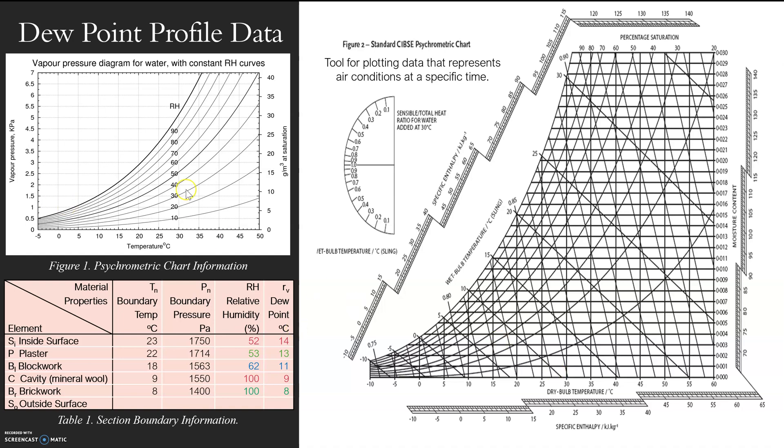There's two curves here. They're both the same, both psychrometrics. The relationship is always the same. The one on the left has been produced to show us the relationship between vapor pressure in kPa and temperature, which is what we've got. We've got our boundary pressure at Pa and our temperature in degrees Celsius.